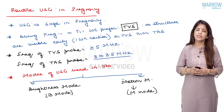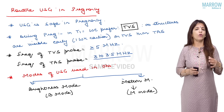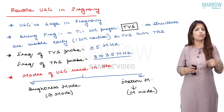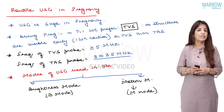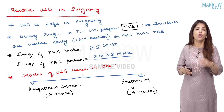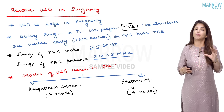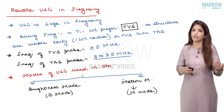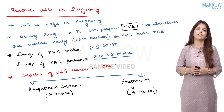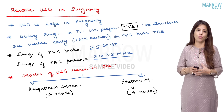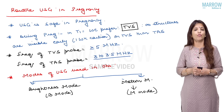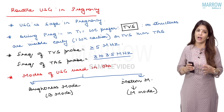In pregnancy, in the first trimester when we do ultrasounds, we always prefer a transvaginal scan over a transabdominal scan because all structures are visible earlier on a transvaginal scan. All structures on transabdominal scan will be visible one week after they are visible on transvaginal sonography. The frequency of a transvaginal sonography probe is more than or equal to 5 megahertz, whereas for transabdominal scan, the frequency is 3 to 3.5 megahertz.